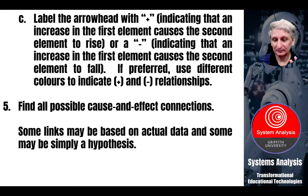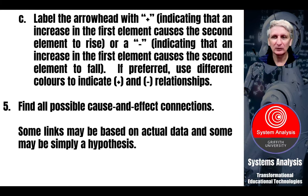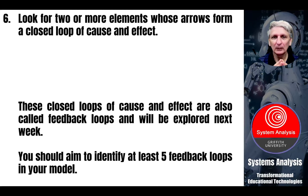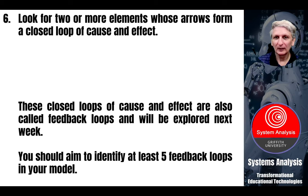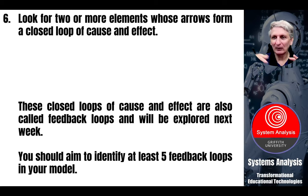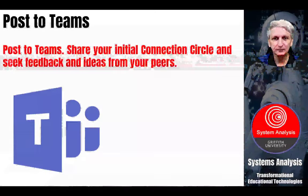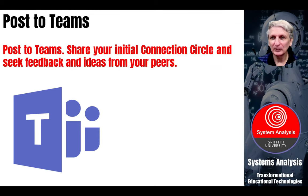Some connections you might have hard data on; some might just be conjecture such as student enjoyment levels — but it doesn't matter at this point. Once you've got those connections drawn, look for where the arrows form a complete connection loop — we call these causal loops. The arrows all have to go in the same direction, so you can't have two arrows pointing at one another as part of a causal loop. These closed loops of cause and effect are called feedback loops or causal loops, and we're going to be exploring those next week. If you can try to identify five causal feedback loops in your model, that will assist — and share that onto Teams so we can see the results of your work.